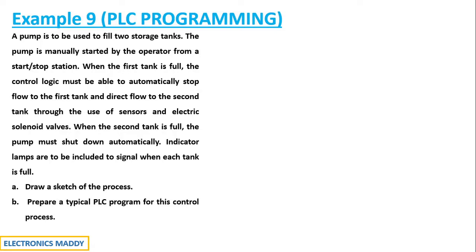This question deals with a pump operation. A pump is used to fill two storage tanks. The pump is manually started by the operator from a start or stop station. When the first tank is full, the control logic must automatically stop flow to the first tank and direct flow to the second tank through sensors and electric solenoid valves. When the second tank is full, the pump must shut down automatically. Indicator lamps are included to signal when each tank is full. Draw a sketch of the process and prepare a typical PLC program for this control process.